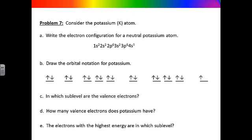The next question asks in which sublevel the valence electrons are located. Find the highest energy level written in the electron configuration — this tells you where the valence electrons are. For potassium, it is the 4s sublevel. Potassium has one valence electron, as indicated by both the superscript in the electron configuration and the number of arrows in the orbital notation. The electrons with the highest energy are also in the 4s sublevel, which is the last sublevel written in the electron configuration.